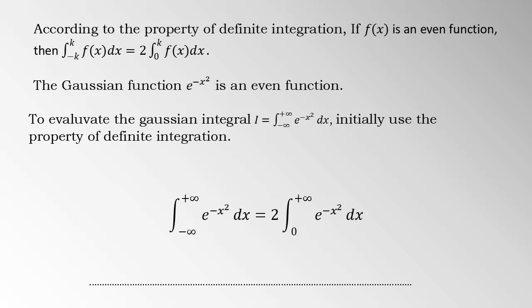Thus, integral negative infinity to positive infinity, e raised negative x square dx, is equal to 2 times integral 0 to infinity, e raised negative x square dx.